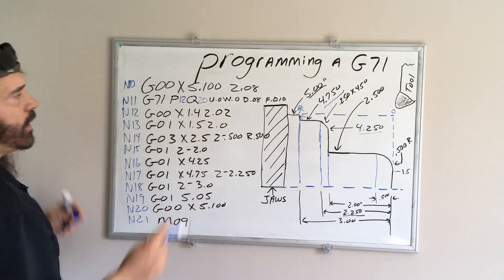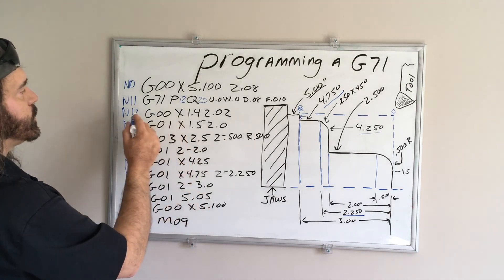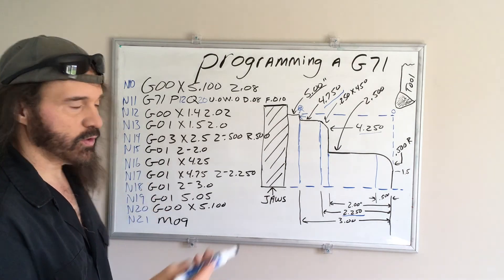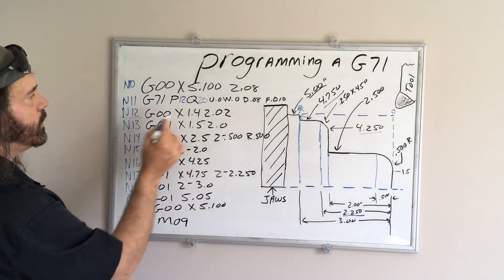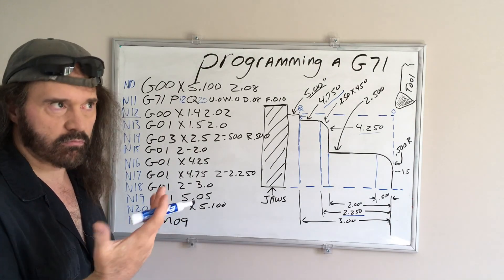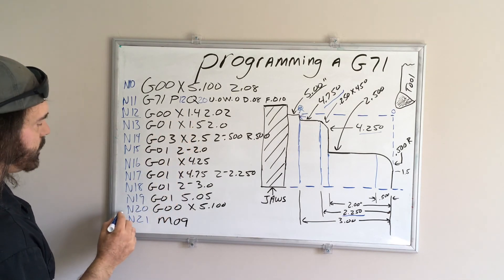So why it's like that? I don't know. That's just the way it is. So your P is your beginning value, so that's line number 12. Your Q is your ending line of code, and that's down here.